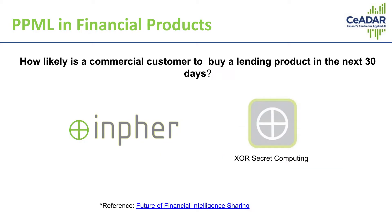Our second use case comes from the banking industry. A company named Infer, a startup, has developed a platform called XR Secreted Computing. What they were trying to do was answer the simple question: how likely is a customer to buy a lending product in the next 30 days?